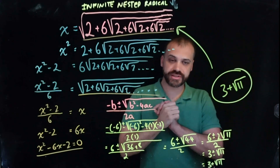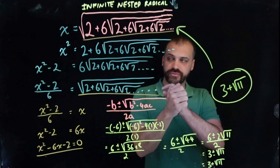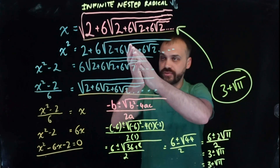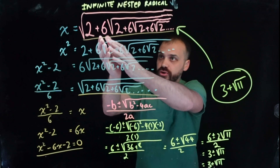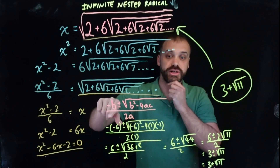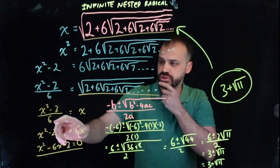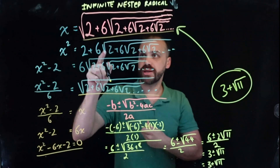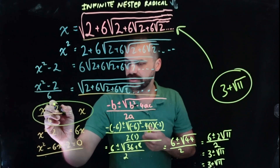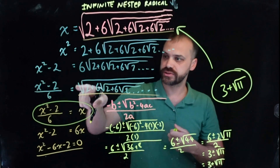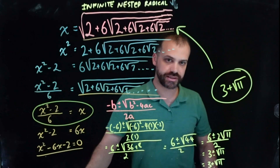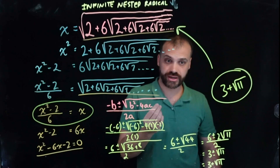Hopefully you can tell I really love this. I love the fact that we've gone from this expression and been able to put it inside of itself — I cannot believe you end up here. You go from there to here, and I just love that. That is an infinite nested radical.